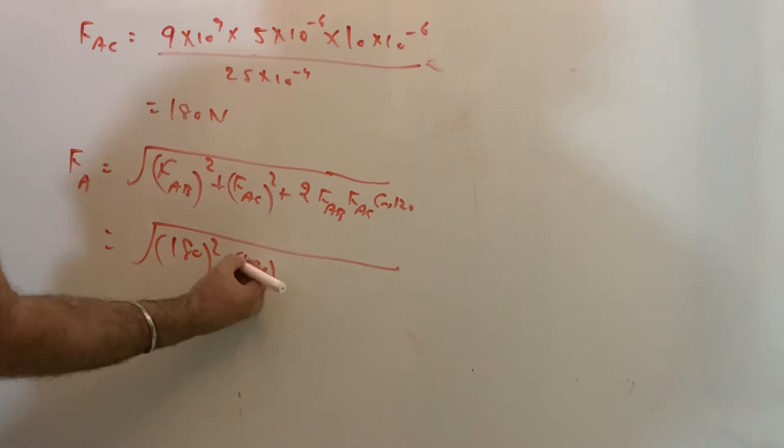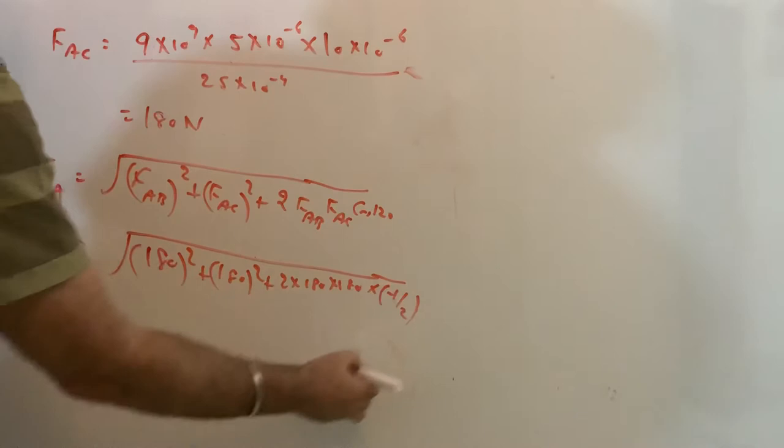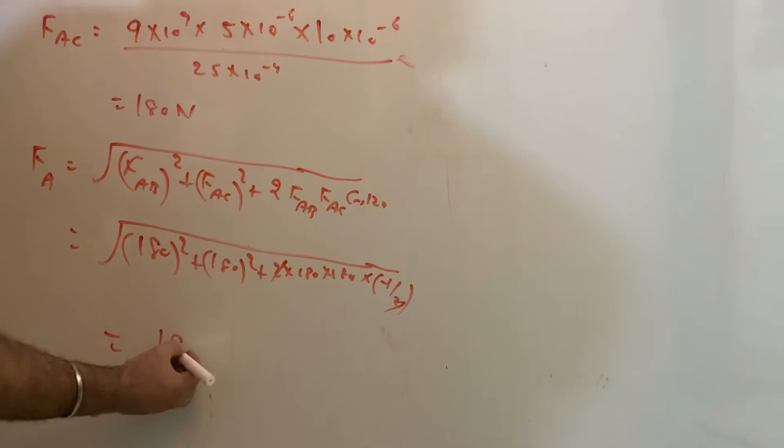Plus 2×180×180. Cos(120°) is -1/2, so this 2 will cancel with this. I leave it to you. This comes out to be 180 N.